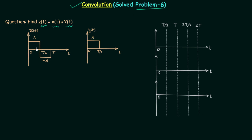You can see the waveform of signal X(t). It has two rectangular pulses. The first rectangular pulse is from 0 to T/2 and has positive amplitude A. The second rectangular pulse is from T/2 to T and has negative amplitude minus A.